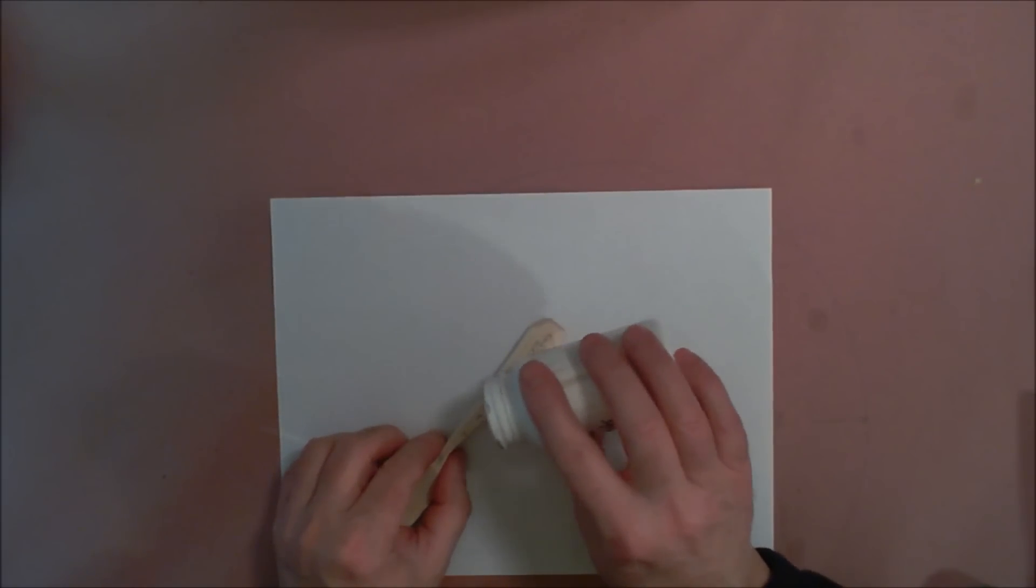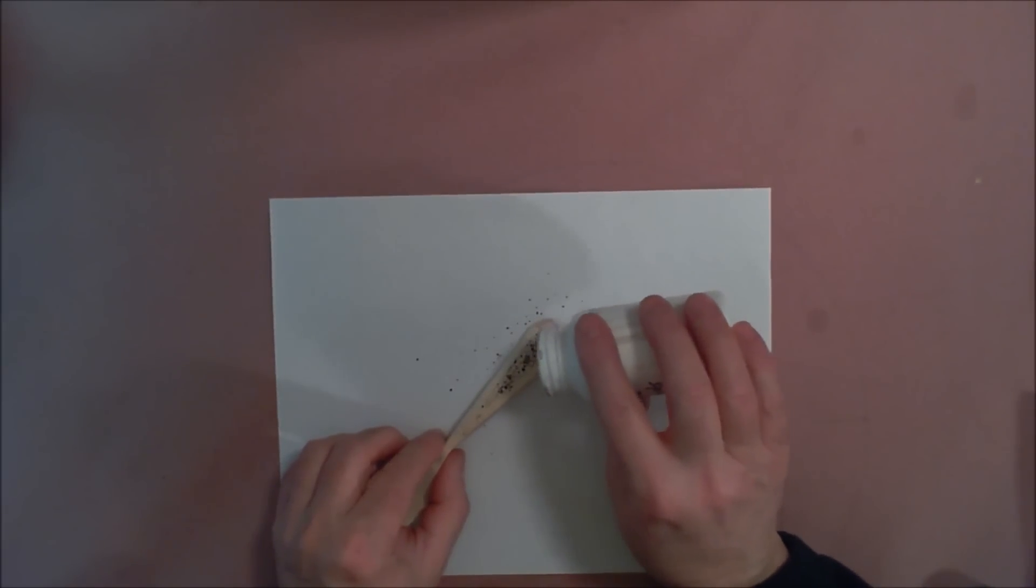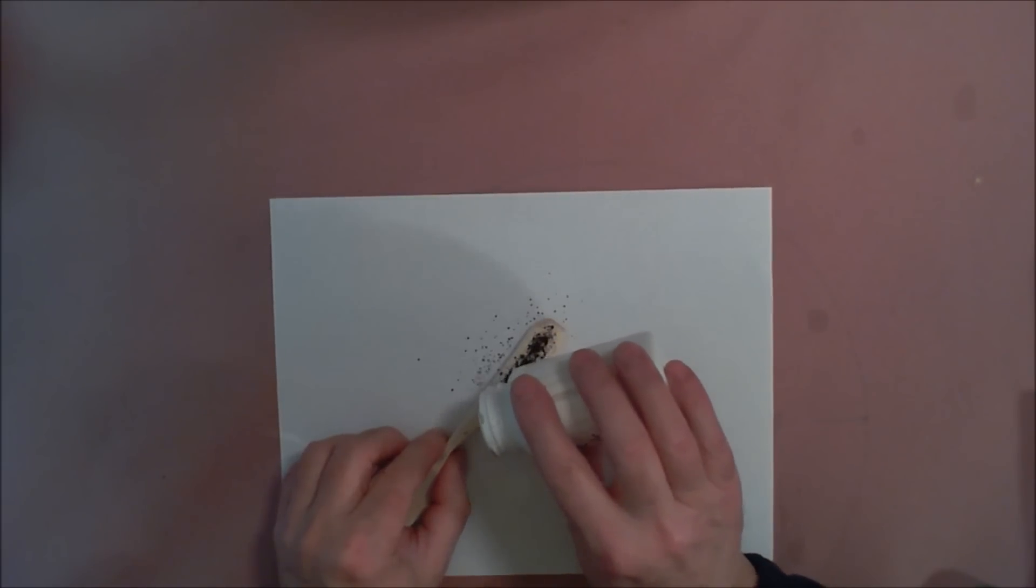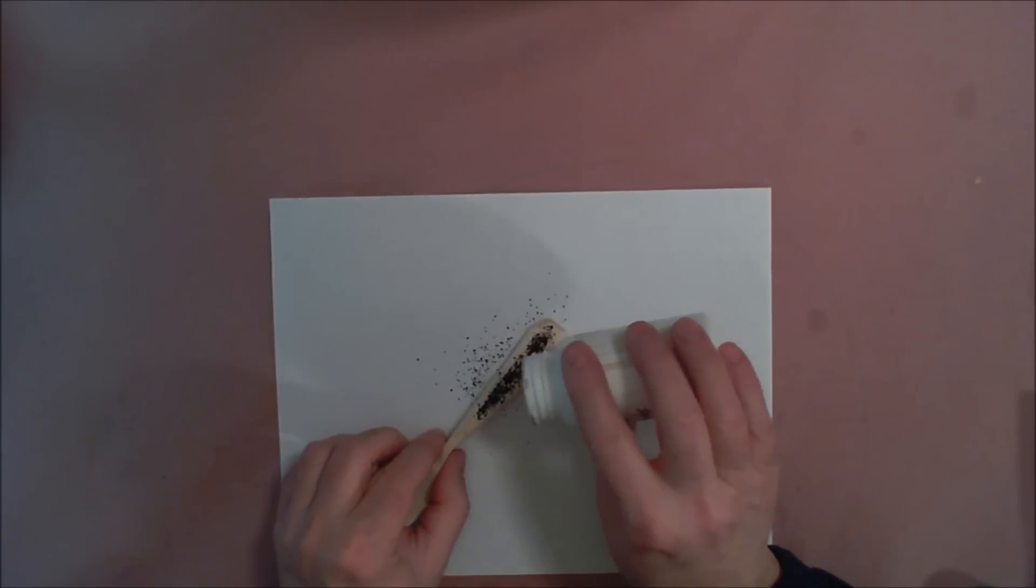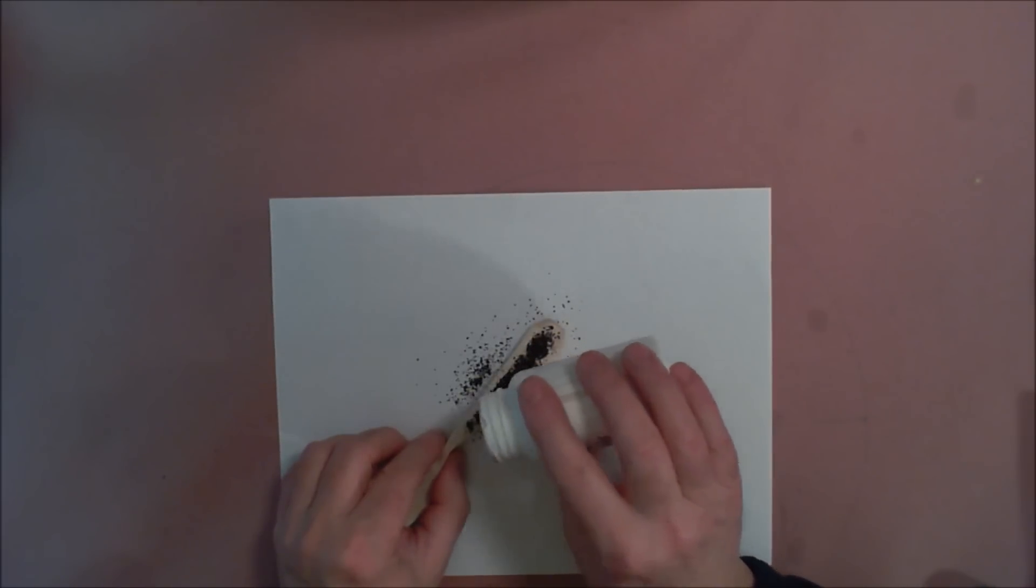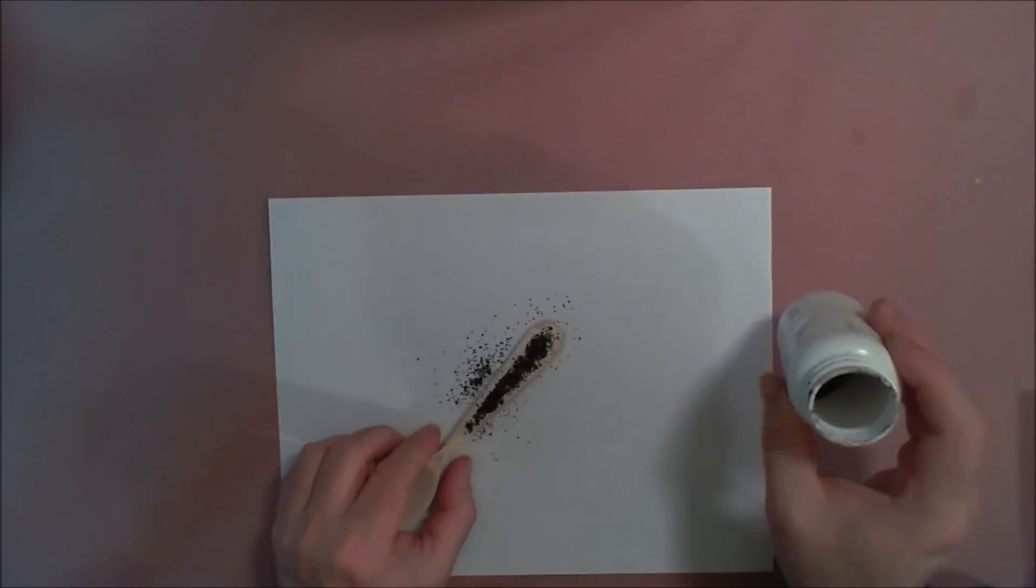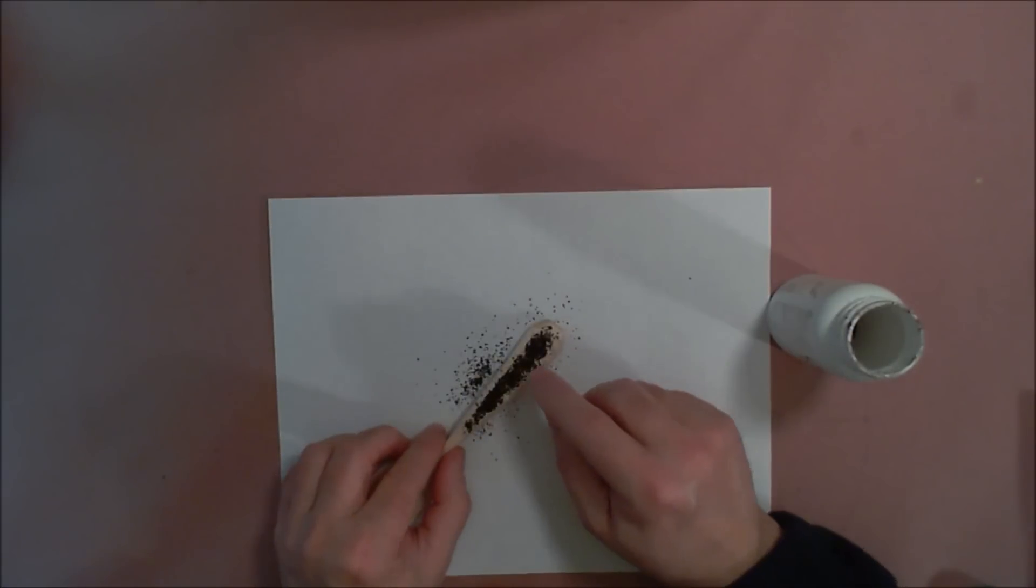These are coffee grounds that I put on a cookie sheet on the wood stove and dried out after they were used. Then I crushed them so they'd be a little finer powder. I'm just going to try rubbing that into the cuts I just made.